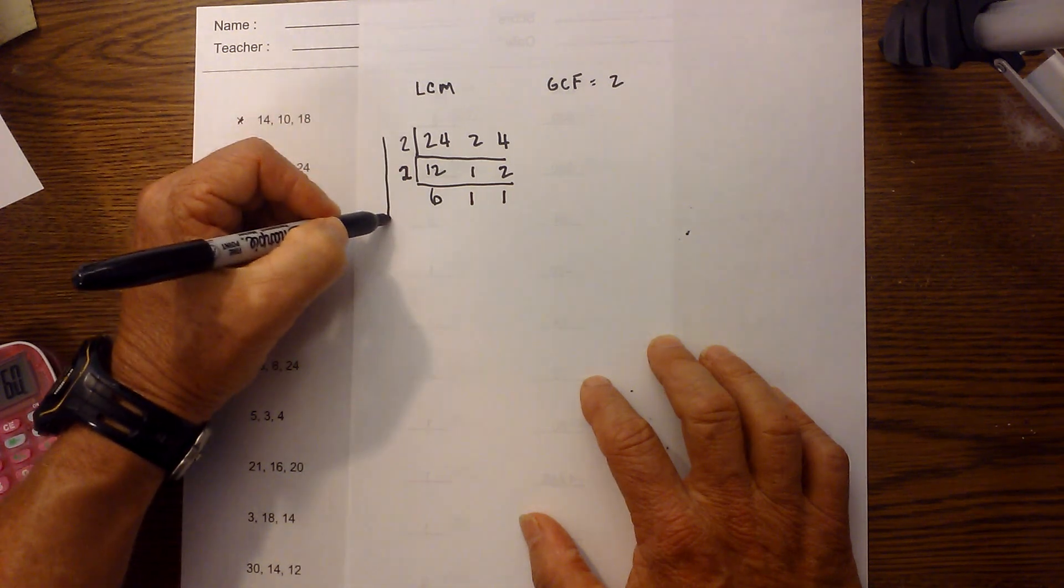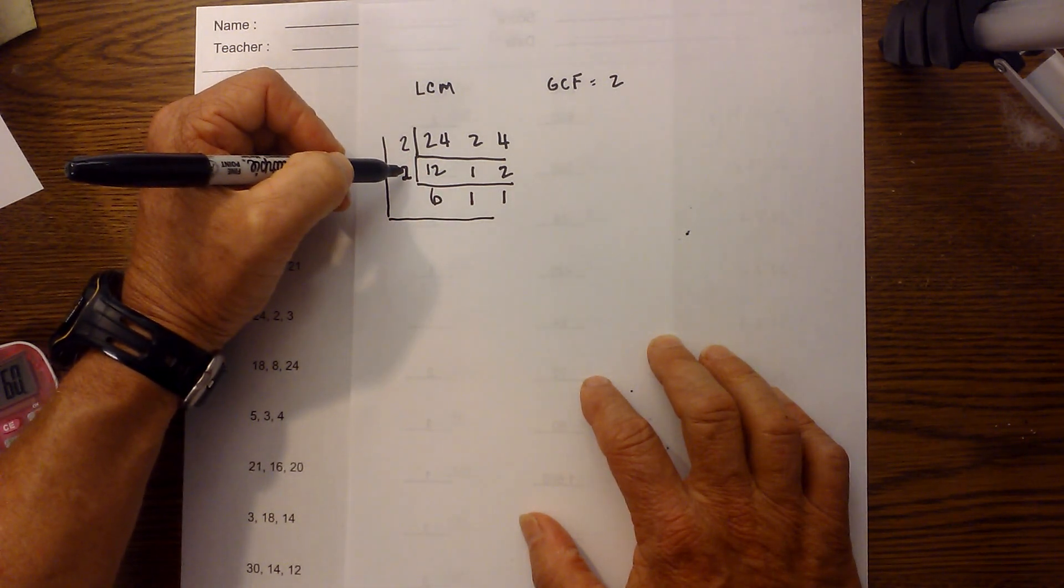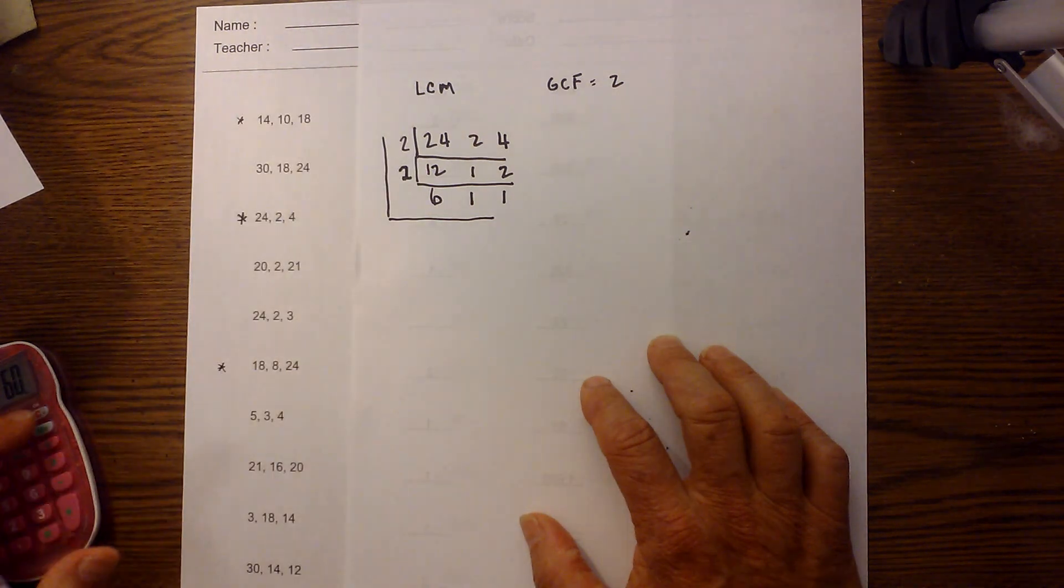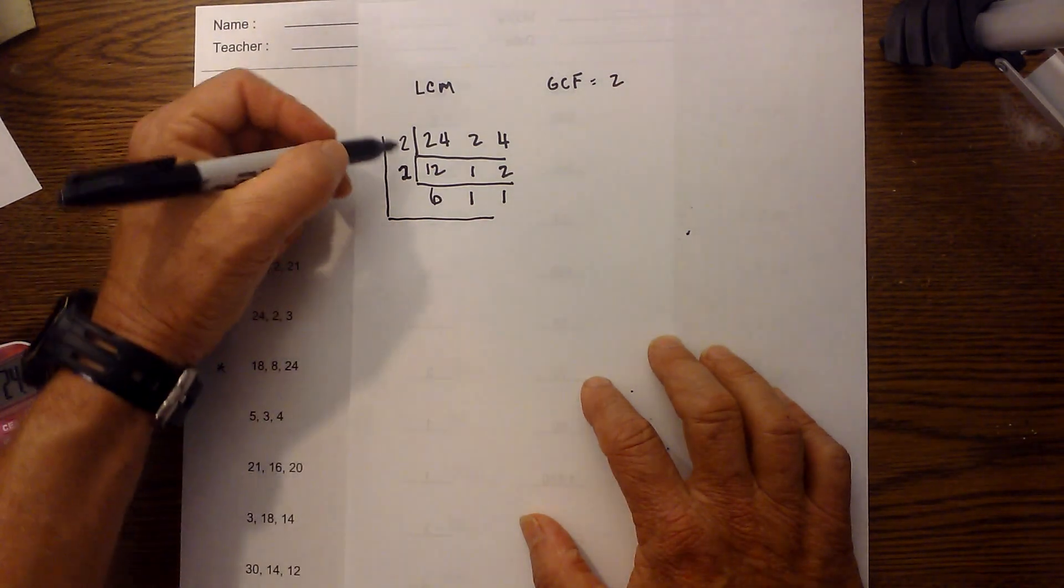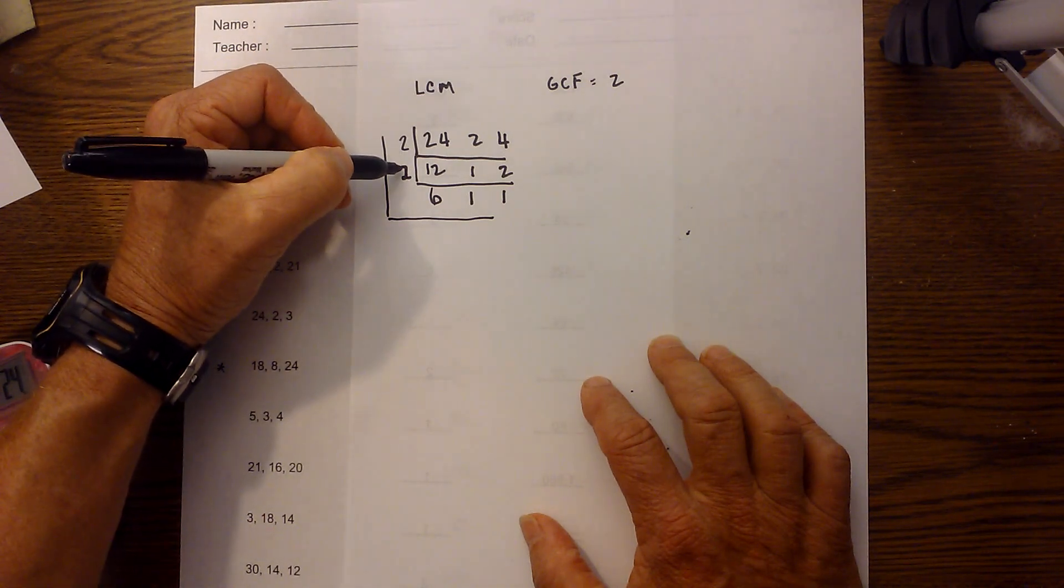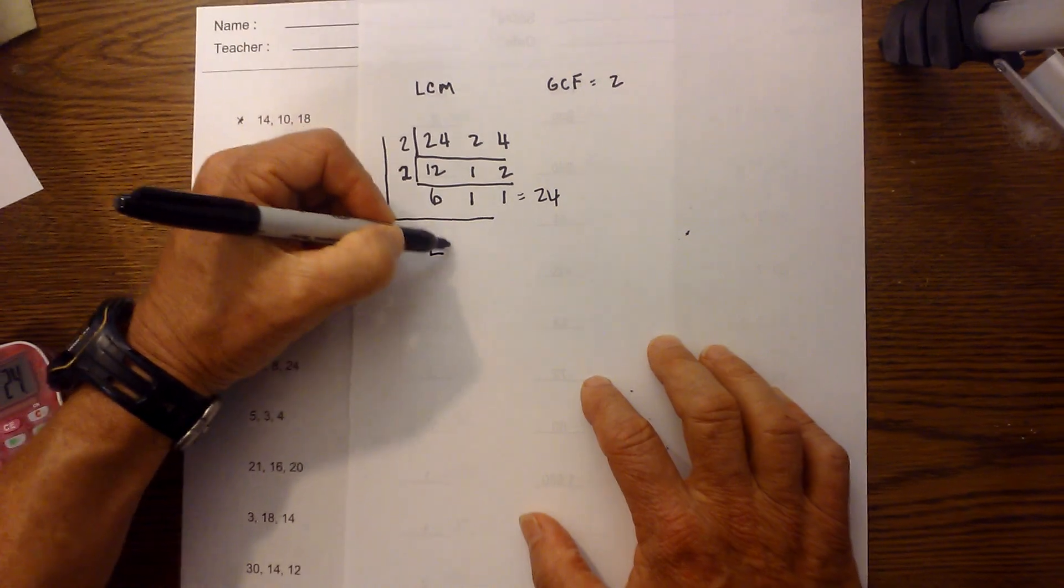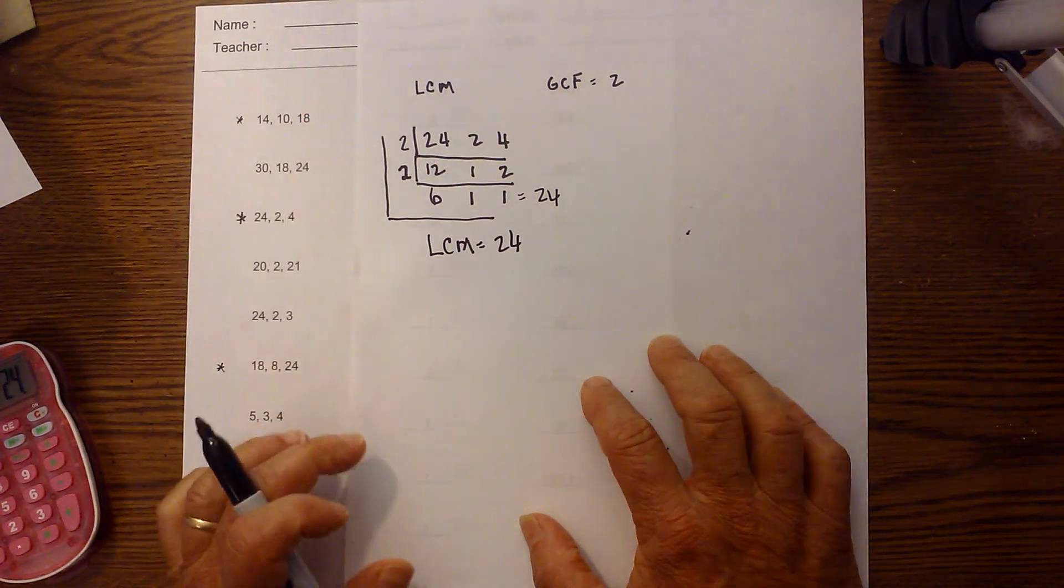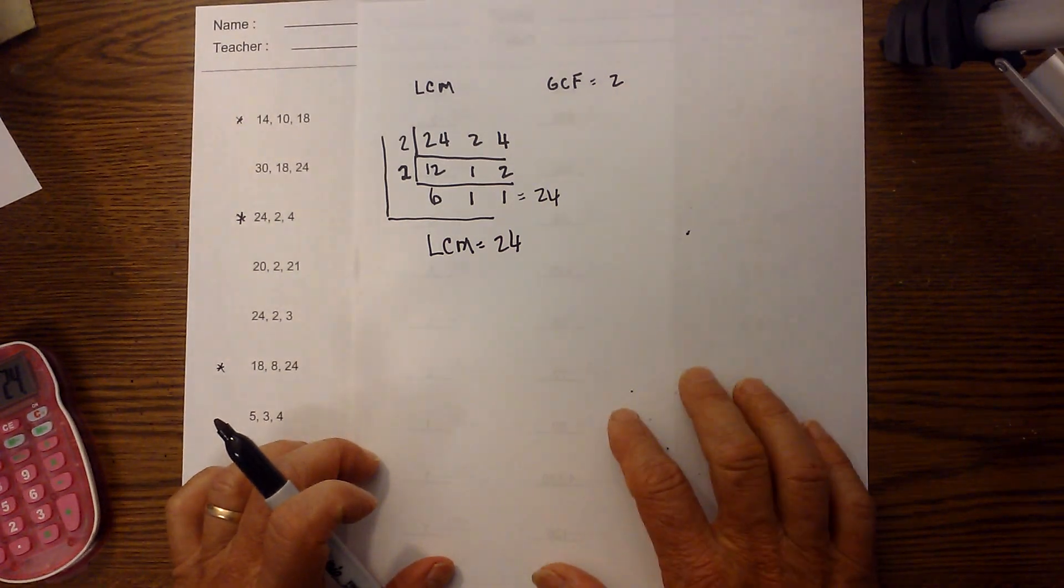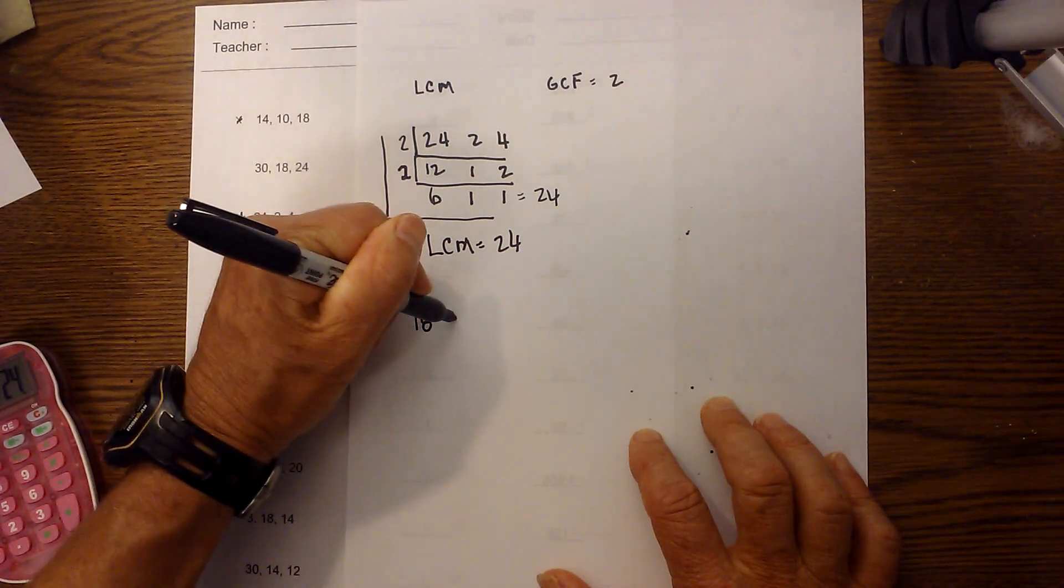At this point I multiply what's on the outside and think of it like an L. See how that's an L on the outside? So 2 times 2 is 4, and then 4 times 6 is 24. Therefore, the LCM is equal to 24.